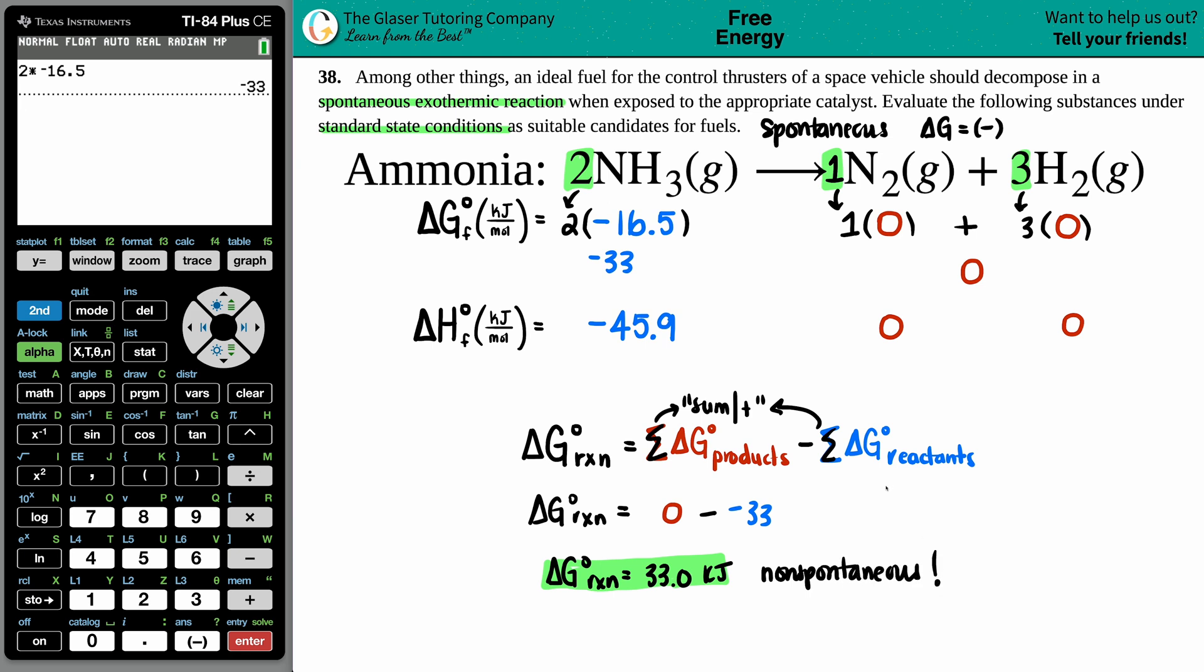This is a positive answer. Uh-oh, positive means that's non-spontaneous. That means you do need extra energy from an outside source to make this reaction run—needs like a little extra push. Right off the bat, we don't even have to go into exothermic because this was not spontaneous. So would this be a suitable candidate? No, it is not a suitable candidate.